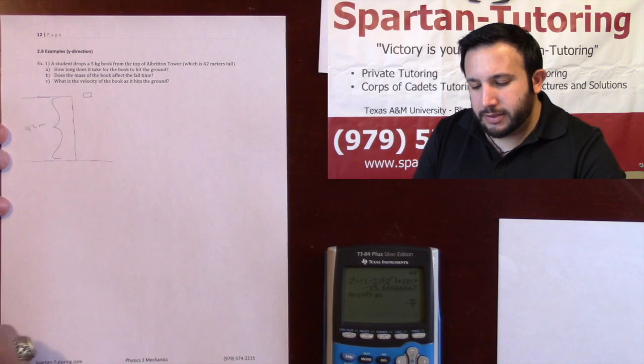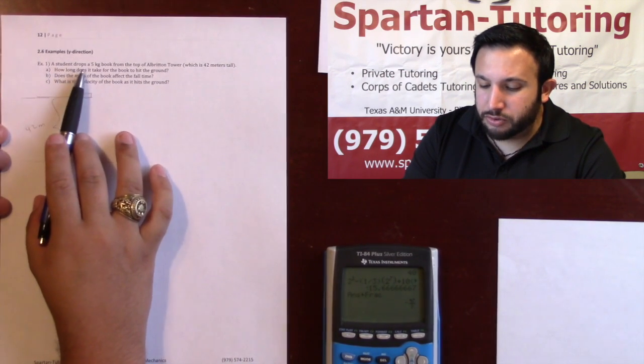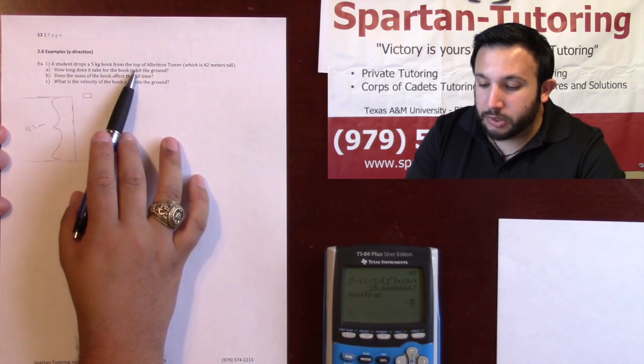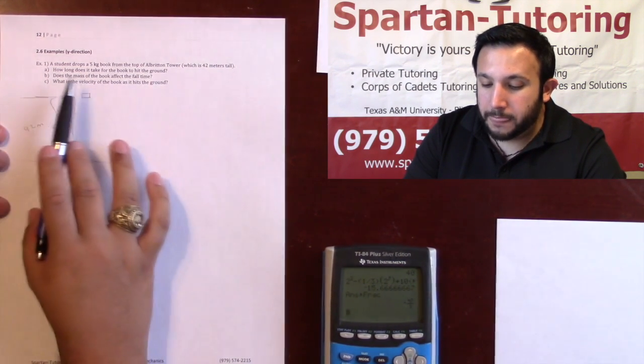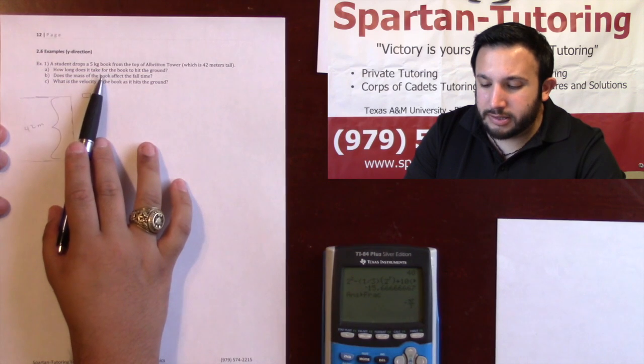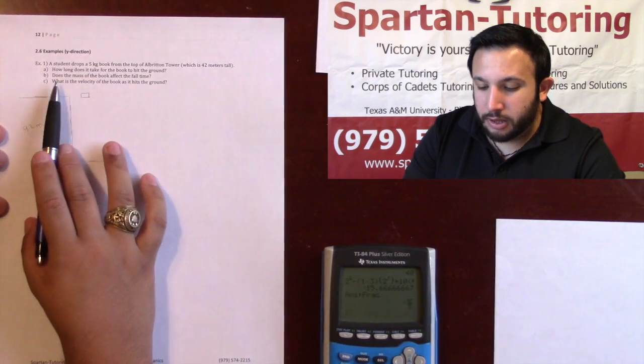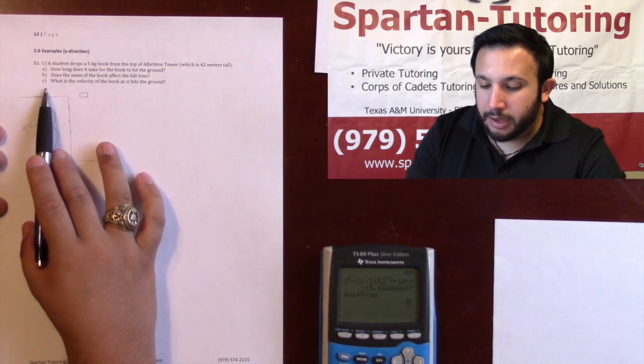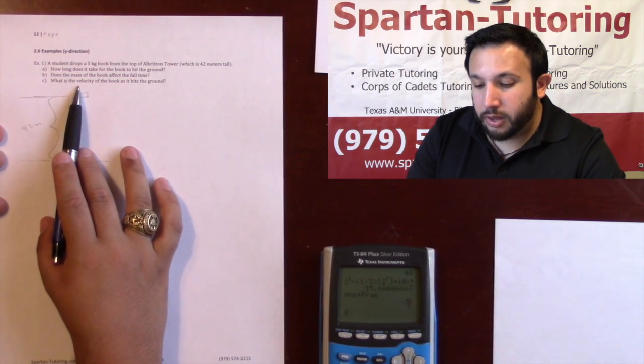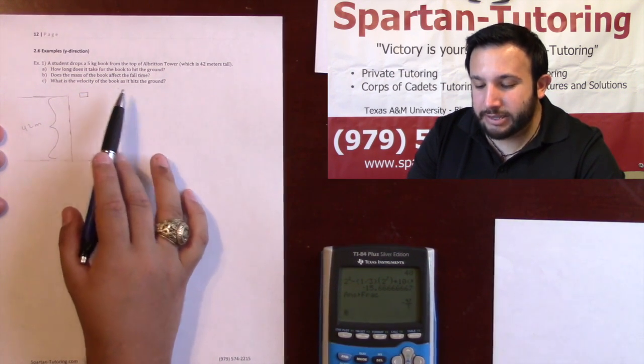Taking a look at this example, it says a student drops a five kilogram book from the top of Albritton Tower, which we'll say is 42 meters tall. Part a: how long does it take for the book to hit the ground? Part b: does the mass of the book affect the fall time? And part c: what is the velocity of the book as it hits the ground?